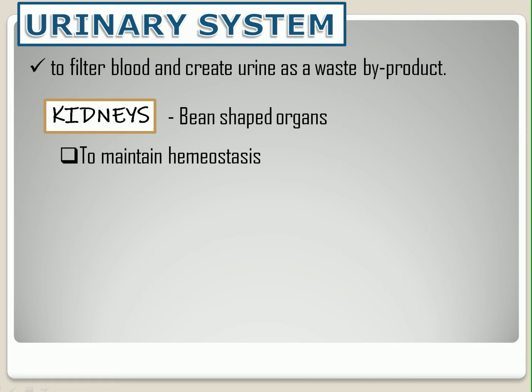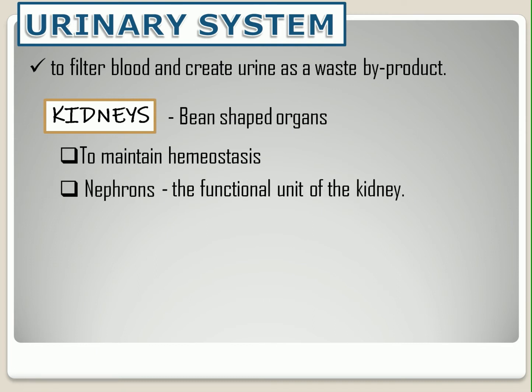We also have nephrons. It is the functional unit of the kidney. Each kidney is made up of millions of filtering units called nephrons. Each nephron includes a filter called the glomerulus and a tubule. The glomerulus filters the blood, and the tubule returns the needed substances to the blood and removes waste.